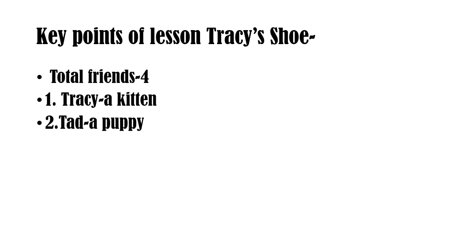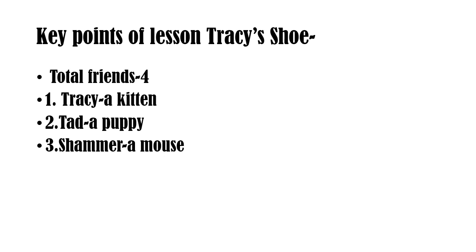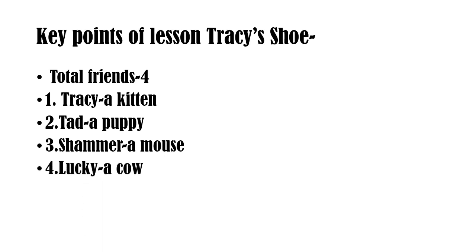The next one is Dad. Who is Dad? A puppy, and Tracy's friend. The third one is Shamer. Who is Shamer? A mouse, and he is Tracy's friend. The fourth one is Lucky. Lucky is a cow, and he is Tracy's friend. So these were the 4 friends in this lesson, Tracy's Shoe.